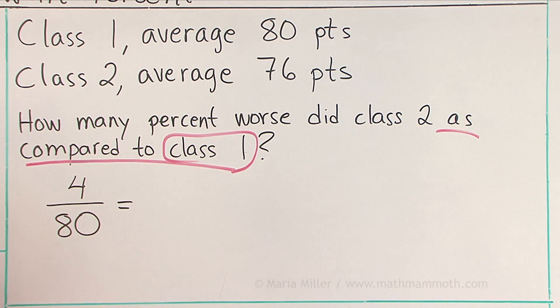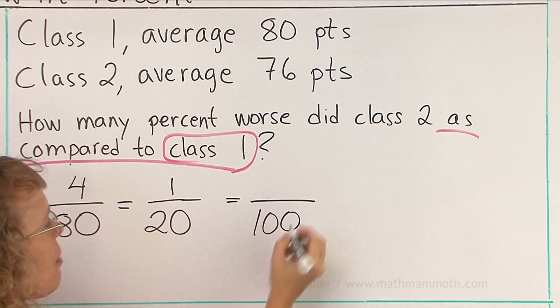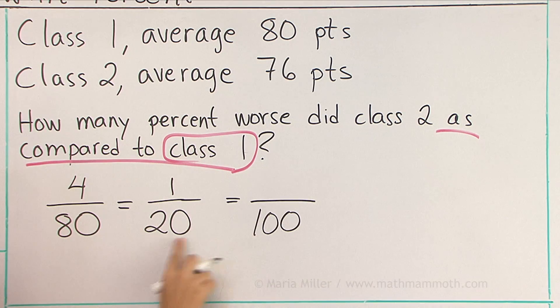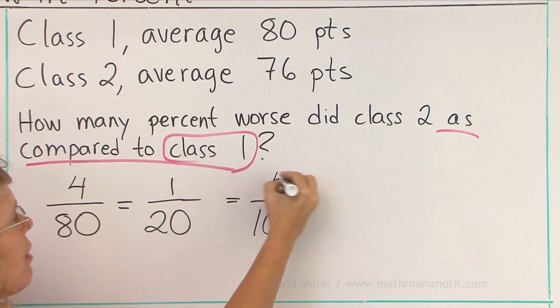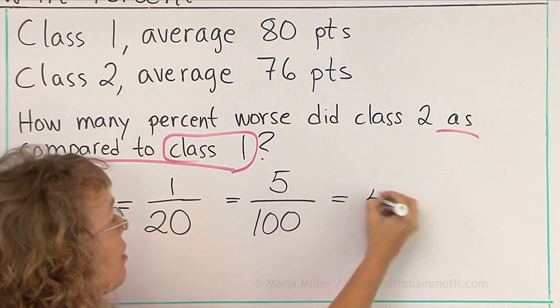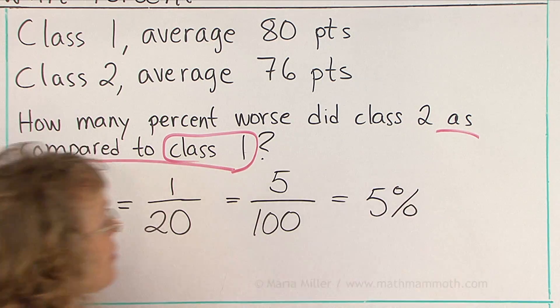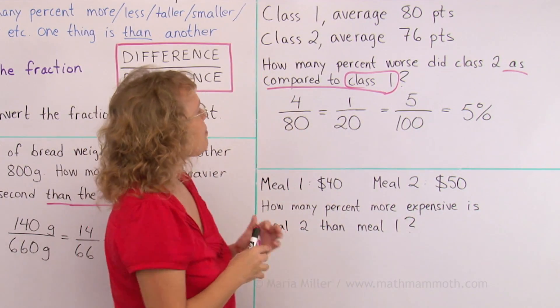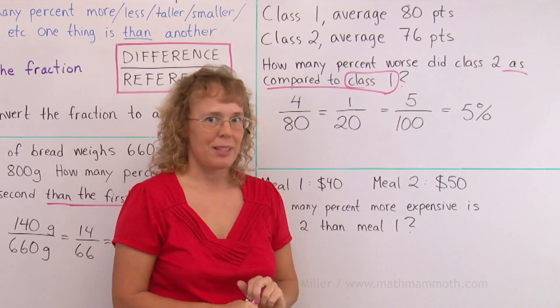This one is easy. 4 over 80 simplifies to 1 over 20. And this as a percent is easy too, right? Because we can write it as something over 100. 20 goes 5 times here, so 5 goes here. And we get 5%. In other words, class 2 did 5% worse as compared to class 1.